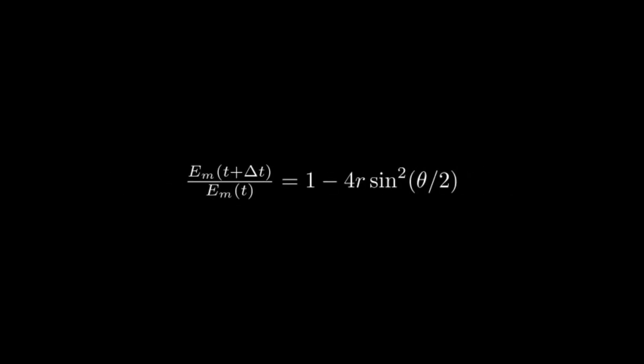Using the following identity, we can write the error equation in the following form. We define the numerical amplification factor as shown. To ensure stability, the error should not grow over iteration. The absolute value of G should be less than 1.